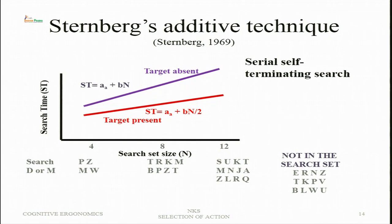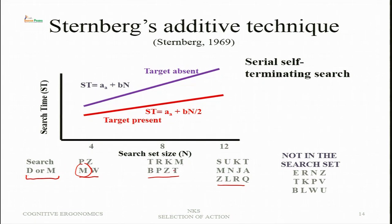Sternberg's additive technique — discussed earlier in relation to attention and perception — suggests that reaction time increases linearly with memory set size. Certain letters are given as a memory set and the respondent must search for a particular letter in that list. The memory set can have four, eight, or twelve letters, and the subject's task is to search for a target such as D or M — when the memory set is larger, search time increases.